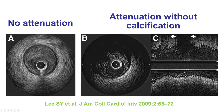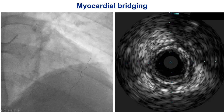There are also non-calcified lesions that can attenuate the ultrasound beam, and these lesions have been shown to have a high lipid core plaque. This is an example of attenuation behind such a plaque — a lipid core plaque that is potentially more likely to cause distal embolization.